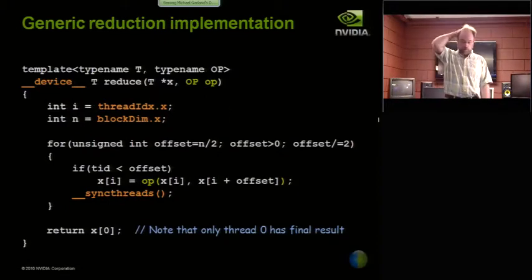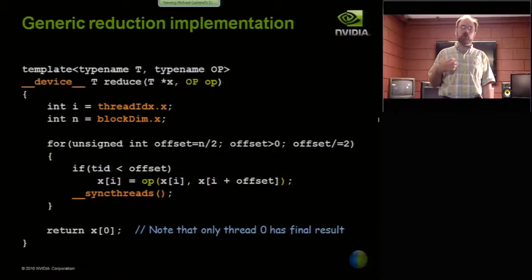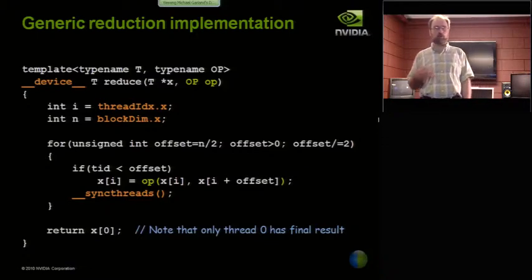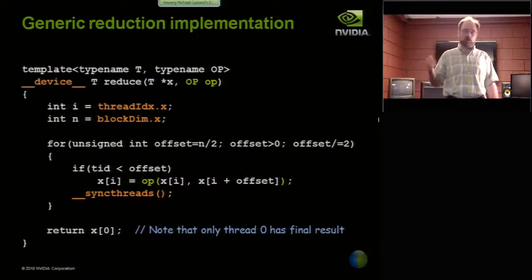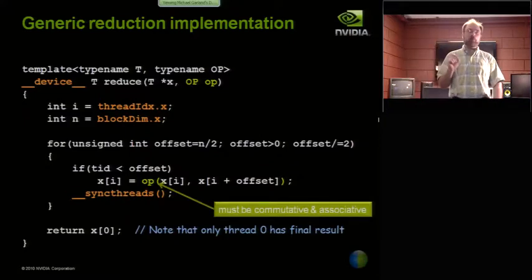So first of all, one thing you should think about when thinking about problems like this is, can I make this generic in a useful way? I would claim that a lot of kernels like this are actually a lot more useful if you use the fact that CUDA does in fact support templates and allow them to take some kind of function object, which means that you can use them for something other than just addition. You could use them for multiplication or max or min or any other suitable binary operator. As long as op, this function object I'm passing in, is commutative and associative, this code works correctly.